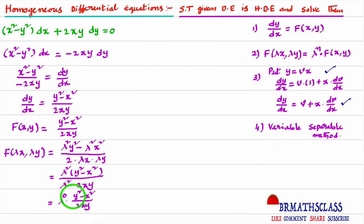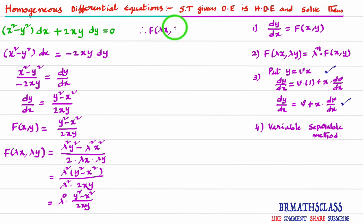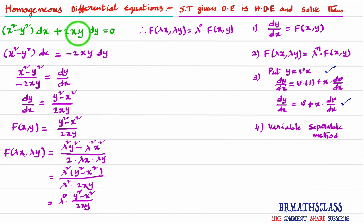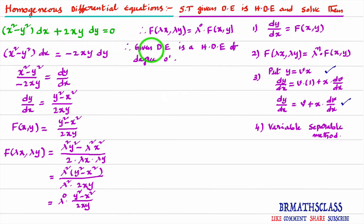We observe that (y² − x²) / (2xy) is nothing but f(x, y). Therefore, f(λx, λy) = λ⁰ · f(x, y). Since we expressed f(λx, λy) in the form λⁿ · f(x, y), we conclude that the given differential equation is a homogeneous differential equation of degree 0.